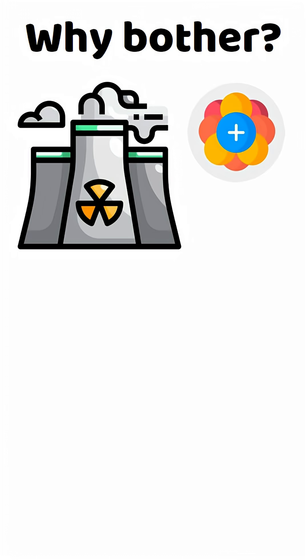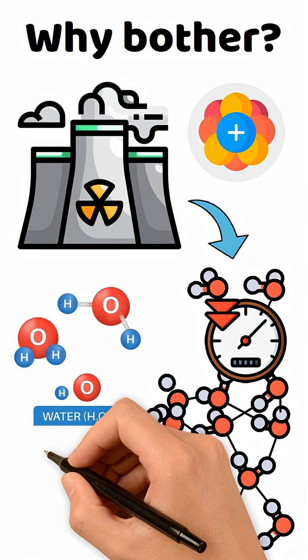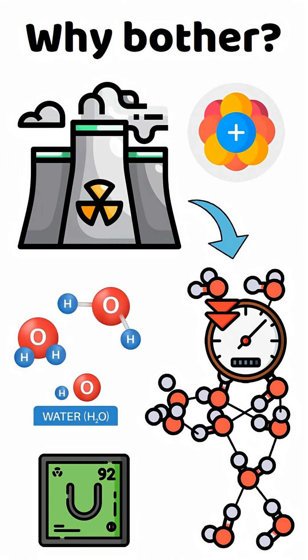It's the ultimate neutron bouncer. It slows down neutrons to keep a chain reaction going, but unlike regular water, it doesn't absorb them. This lets some reactors run on natural uranium.